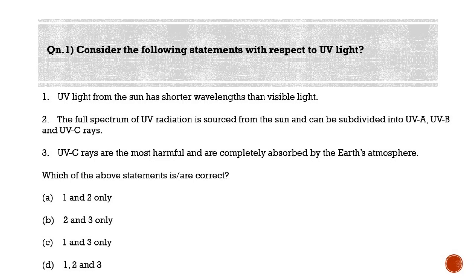First question for the day: consider the following statements with respect to UV light. Statement one: UV light from the sun has shorter wavelengths than visible light. Statement two: the full spectrum of UV radiation is sourced from the sun and can be subdivided into UVA, UVB, and UVC rays. Statement three: UVC rays are the most harmful and are completely absorbed by the earth's atmosphere. Which of the above statements are correct? Option A: one and two only. Option B: two and three only. Option C: one and three only. Option D: one, two, and three.